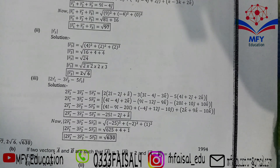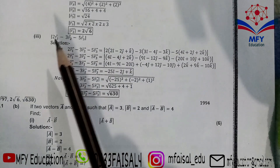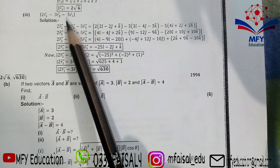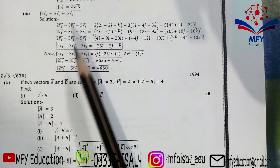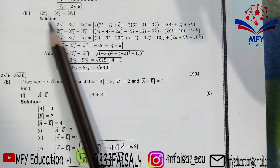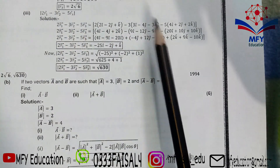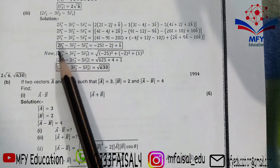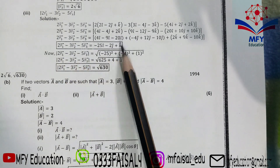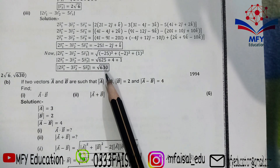The next parts ask you to find mod R3 and the mod of (2R1 − 3R2 − 5R3). For the latter, substitute R1, R2, R3 values, simplify into a single vector form, then find its magnitude using the standard formula.